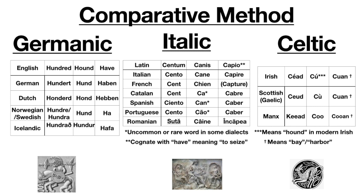The next chart has words for 'hundred', 'hound', and 'have'. I chose hound instead of 'dog' because the word 'dog' does not come from the same place as these words — 'hound' is the cognate with all the other languages. Even though 'hound' has a more specific meaning in English now, originally it was an all-purpose word for any kind of dog. This is semantic narrowing, where a word with a general meaning becomes more specific over time while another word takes the more general meaning. In German I have hundert, Hund, and haben; in Norwegian and Swedish hundra, hund, and ha — all beginning with 'h' sounds in the Germanic languages.